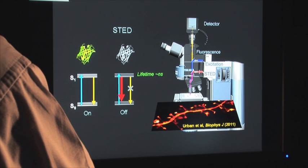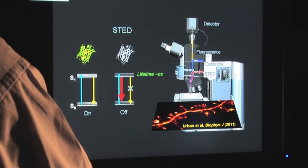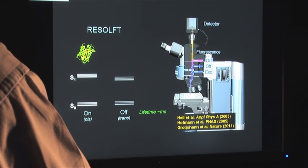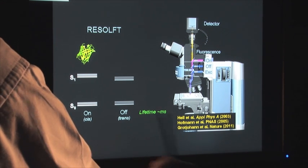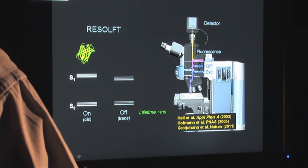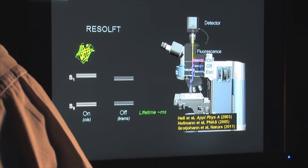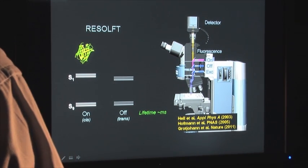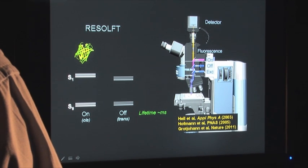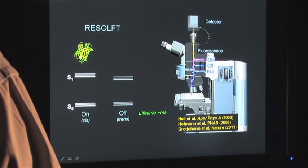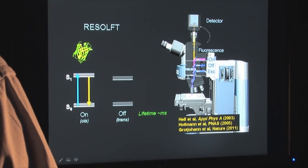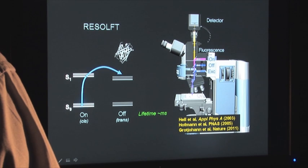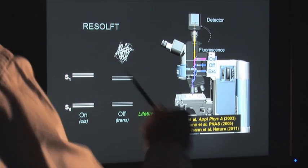The decisive trick in the RESOLFT concept is to use another on-off switching modality of the fluorophore, which relies on long-lived states, metastable states, that have lifetimes of milliseconds. And these lifetimes give us much more time to play the on-off game with the dye. And so, we use a reversible switchable fluorescent protein that not only can be excited to produce fluorescence in its on state, but can also be excited to be turned off.